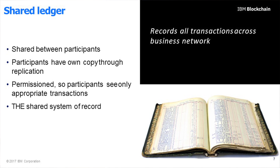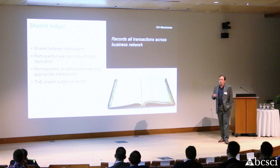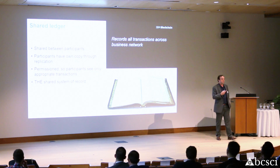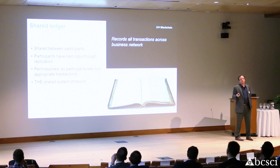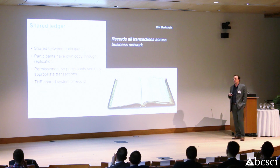Records go through the business network through the shared ledger, but only between participants you've decided to include. Everyone owns a copy through replication. It's permissioned — so, for example, if Monsanto wants to have ADM in their blockchain, they have to explicitly allow them to be a part of it. This really is the future of systems of record.